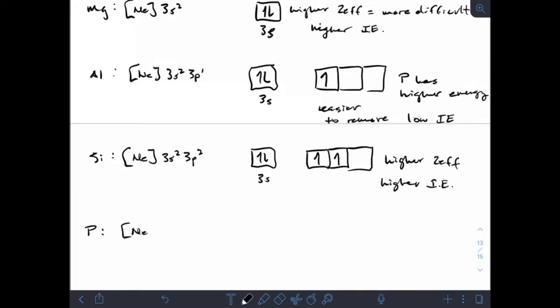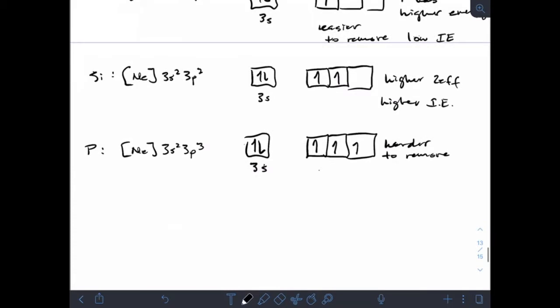Phosphorus—now we've got a completely half-full shell. This is harder still because we have half-full shell, which is very stable, and more Z effective. So higher ionization energy.